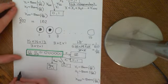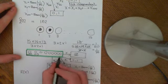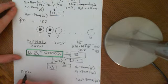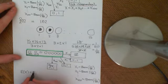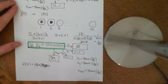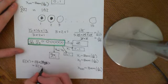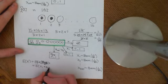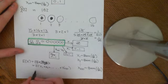Now we want the expected value of this random variable X on this probability space. That's just going to equal — we replace X with what it is — the sum of all of these. So it's the expected value of X1 plus X2, all the way up to X100. Let's write X as X1 plus X2 plus all the way up to X100, and now we apply linearity.